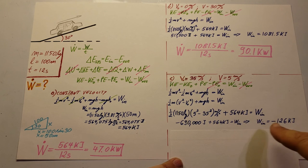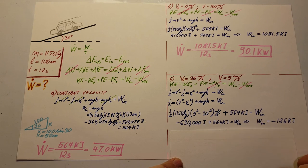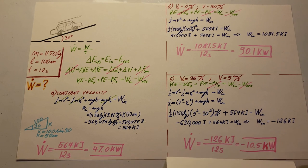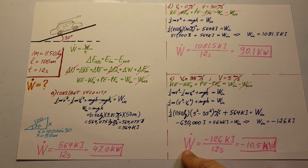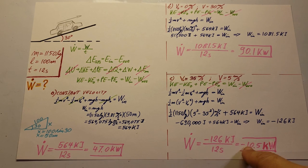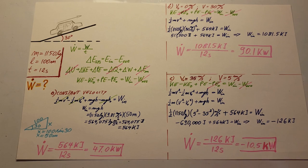The power for Part C is work over time: −126 kJ ÷ 12 s = −10.5 kilowatts.